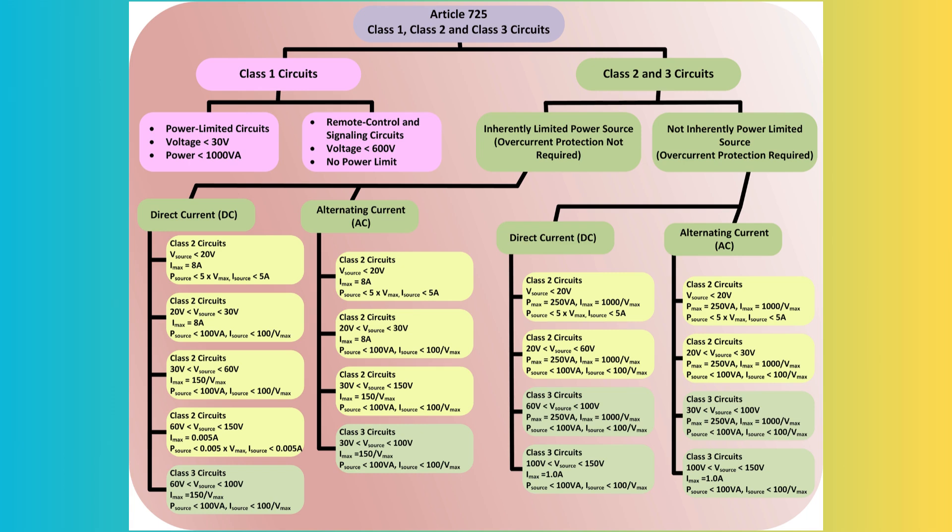Article 725 outlines several requirements for Class I, Class II, and Class III circuits. Class I circuit conductors can share a cable, enclosure, or raceway with power supply circuits only when the equipment they power is functionally associated with the Class I circuit. Multiple Class I circuit conductors can be housed in the same cable, enclosure, or raceway.